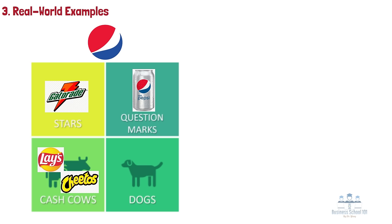Fourth, Dogs. Consumer health trends suggest that all sweetened cola beverages, including Pepsi, will move to the dog quadrant at some point shortly. However, this cannot be predicted with absolute certainty. Pepsi's failed attempts to move with the times have led to some of its most notable failed brands. One of these was Crystal Pepsi, a colorless caffeine-free alternative to Pepsi which was removed from shelves after just 12 months in 1993.